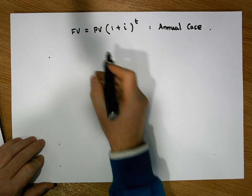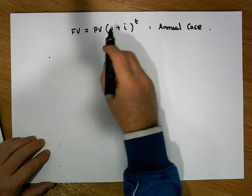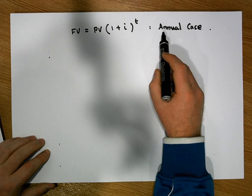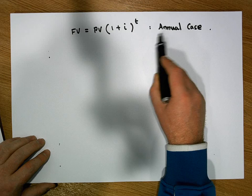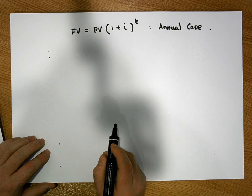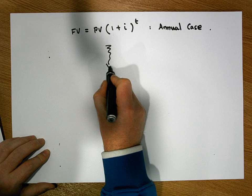We can also generalize this to be a situation where there's more than one compounding happening in a period of time. So this can get generalized again.